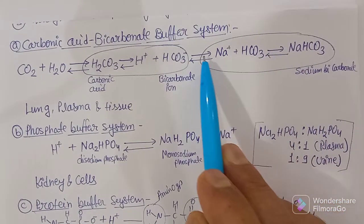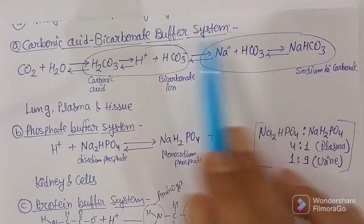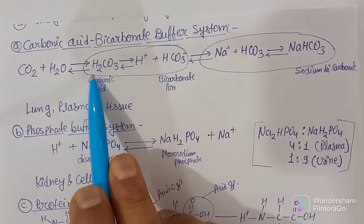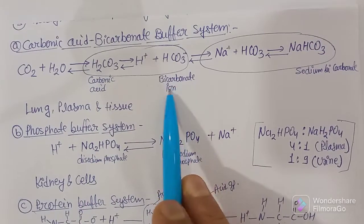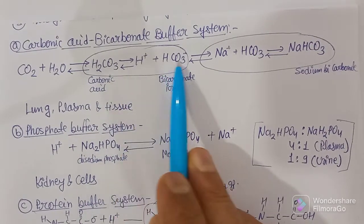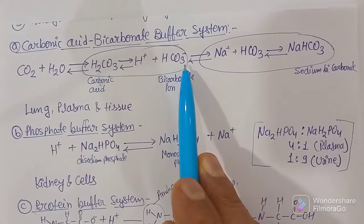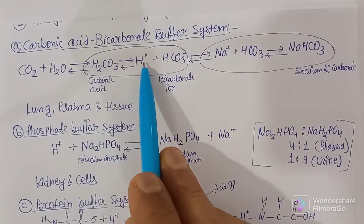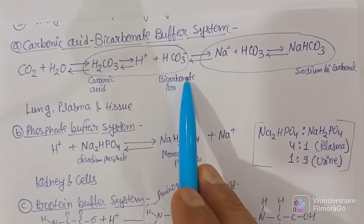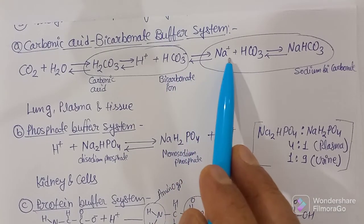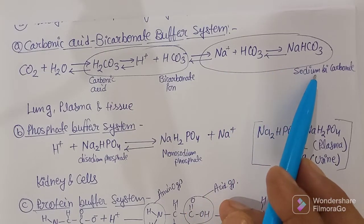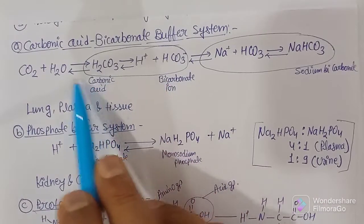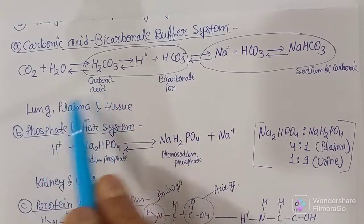This is a reversible system — the entire carbonic acid and bicarbonate buffer system involves interchanging reactions. If carbonic acid is in excess, it releases a hydrogen ion and becomes bicarbonate ion; bicarbonate can react with sodium to become sodium bicarbonate, and sodium bicarbonate releases hydrogen to become bicarbonate, then carbonic acid. This happens in lung plasma and different tissues.